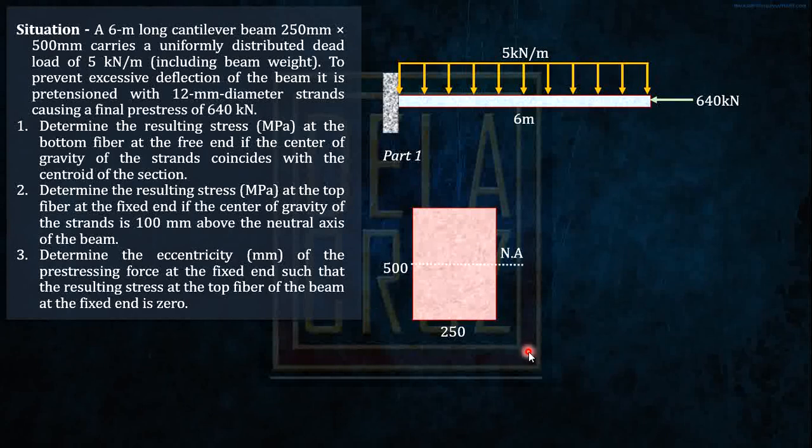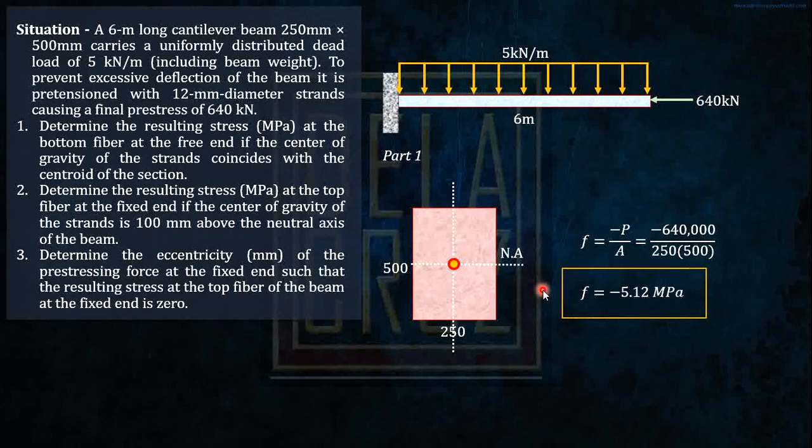This is the cross section with the neutral axis. The strands coincide with the centroid of the cross section. That means the prestressing force is acting at the centroid. Take note, they said at the free end. What is the stress at the free end here? That is just P over area since there is no eccentricity. It won't create a moment. That is just negative 5.12 MPa. The load here will not cause any moment here because that is free.